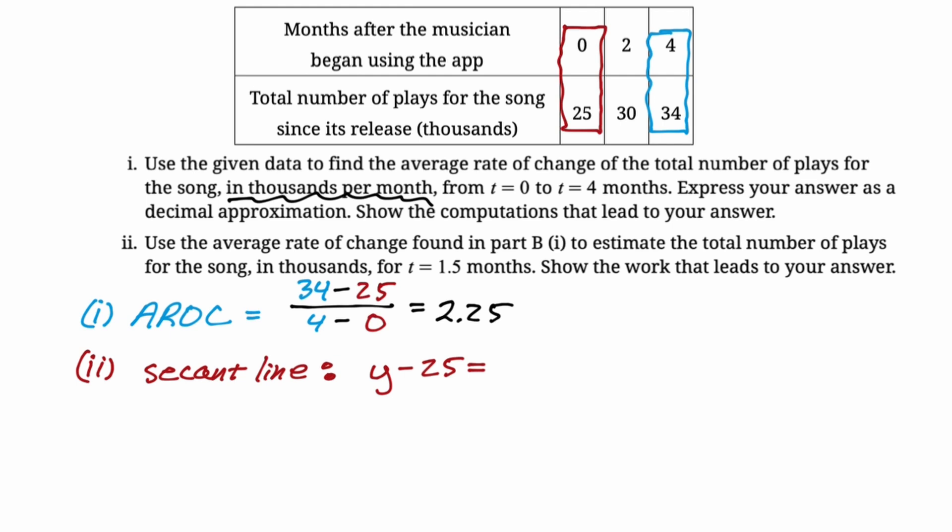So I get y minus 25 is our average rate of change. So 2.25 and then the quantity T minus zero. Okay. So I wasn't really sure what variable to use there. I use y. I think you could probably use D. I don't really know. So I was a little nervous about that. Now, the next thing I need to do is I need to plug 1.5 into this for T and solve and see what y value I get. So I'm going to say y of 1.5 is going to be approximately 25. So I probably should have said that D of 1.5 because we're approximating the value of D at that point. It's 25 plus 2.25 times 1.5. I use a calculator on this. So 28.375.